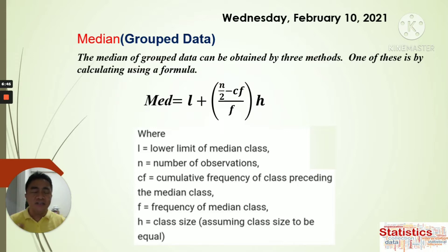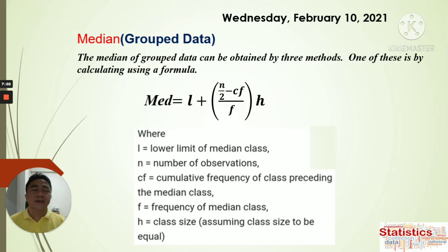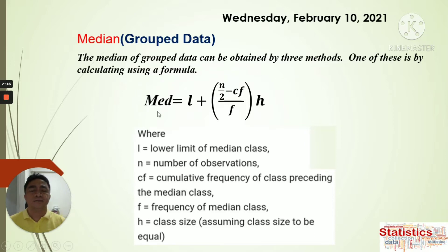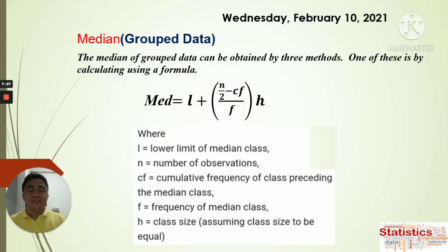This is the second half of finding the median by means of grouping, especially when the data are plentiful or spread far apart. The median of grouped data can be obtained by three methods. One of these is by calculating using a formula. The median is defined as the middle value of the data set.